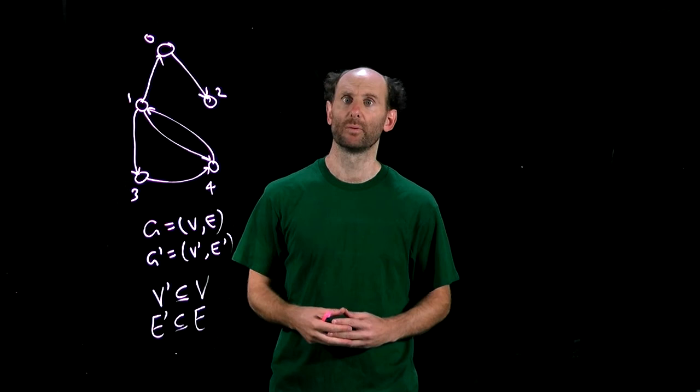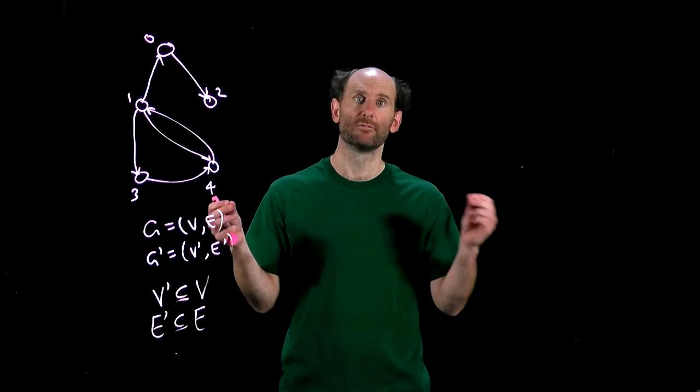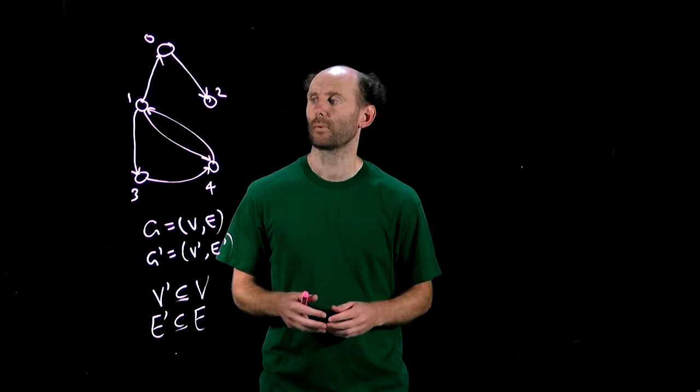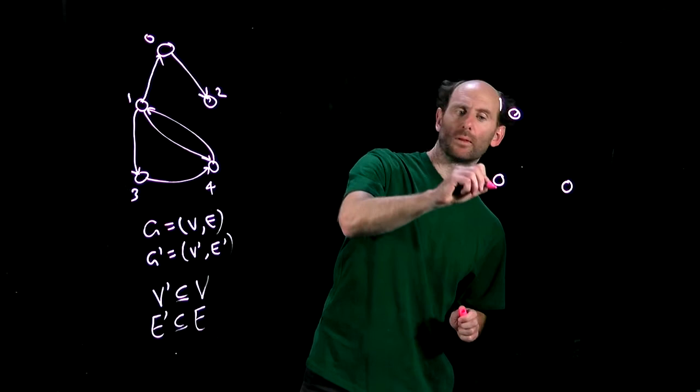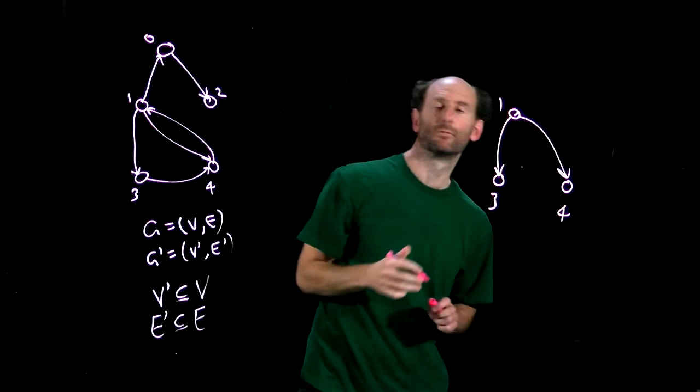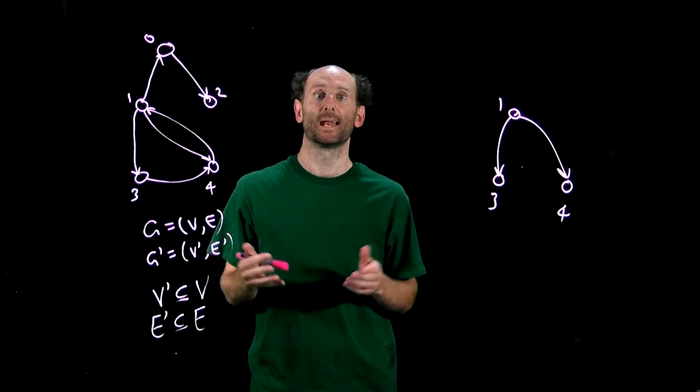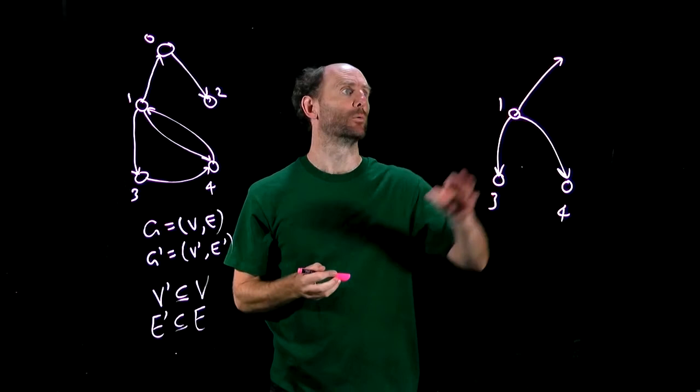So if we chose an arc (U,V) in E', then both U and V need to be included in the subset V'. For example, {1, 3, 4} with arcs (1,3) and (1,4) is a sub-digraph of this example graph. But if I try adding in an arc from say 1 to 0 without also adding in node 0, that would not be a digraph.